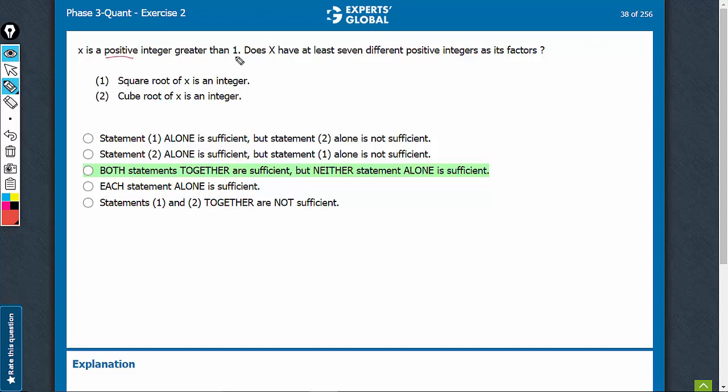x is a positive integer greater than 1. Does x have at least seven different positive integers as its factors? Statement 1: square root of x is an integer.